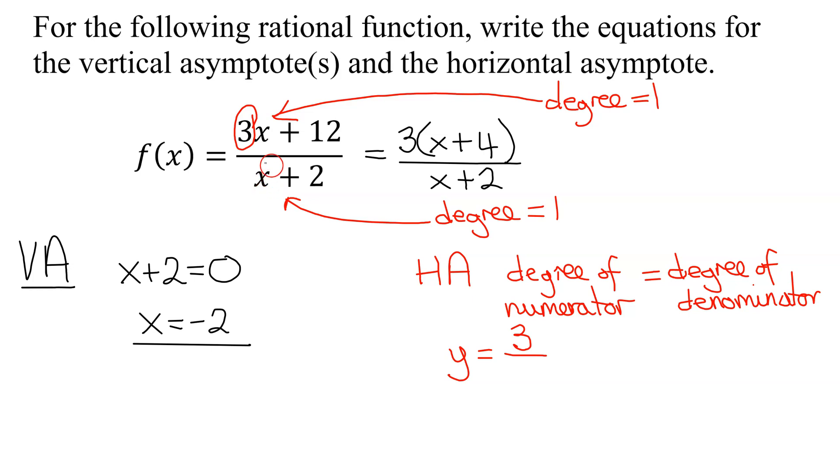Now for the denominator, this term is the leading term, the highest power on the x's. And what number are we too efficient to write in front of that x? There's a 1 there. So what is the leading coefficient of the denominator? It is a 1. So 3 divided by 1 equals 3. So what is the equation of the horizontal asymptote? y equals 3.